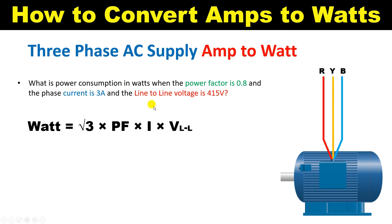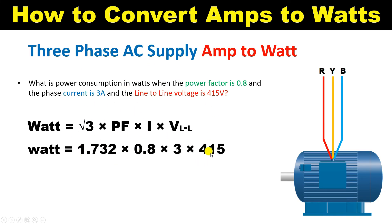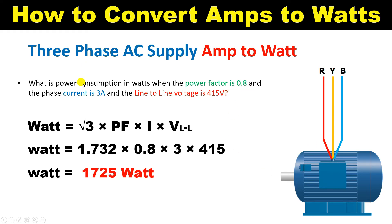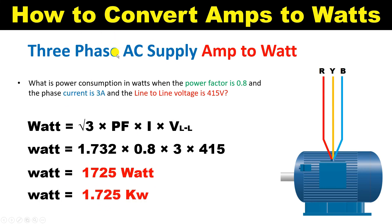The voltage must be line-to-line. Putting all values into the formula: Watt = √3 × 0.8 × 3 × 415. After solving this, the answer comes as 1725 watt. So this motor, operating at 415V with a power factor of 0.8 and drawing 3A, has a power rating of 1725W. If you want to convert this to kilowatt, simply divide by 1000.